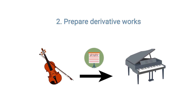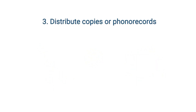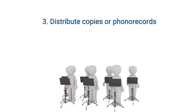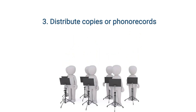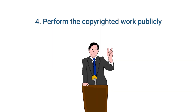Number three: to distribute copies or phono records of the copyrighted work to the public, by sale or other transfer of ownership, or by rental, lease, or lending. Example: a band teacher scanning copies of a piece for his student choir. Number four: to perform the copyrighted work publicly. Example: a poet reciting the lyrics to a popular song at a public reading.